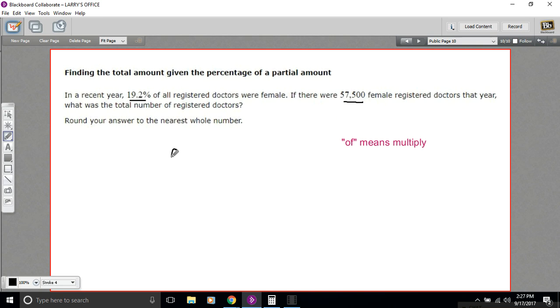So if we were to write that 19.2%, well, actually let's convert this to a decimal. So 0.192, with that two places to the left to make it a decimal, of means multiply.